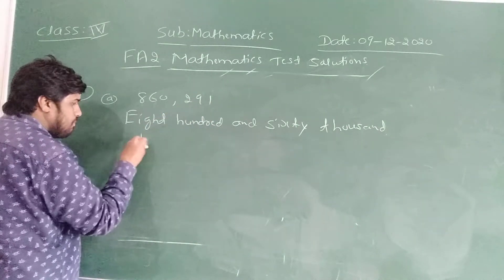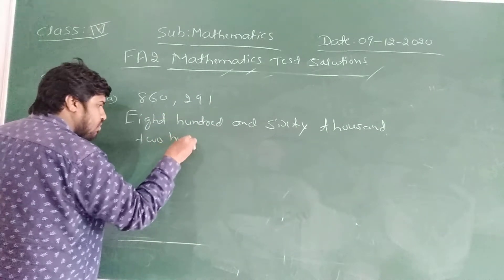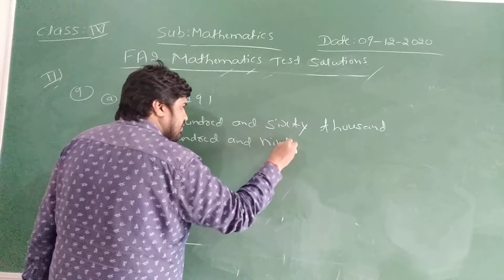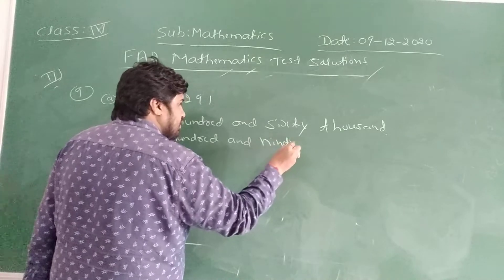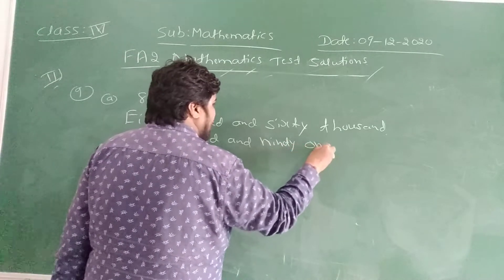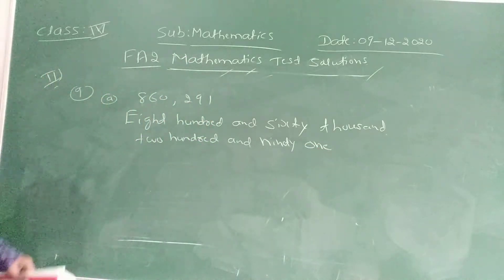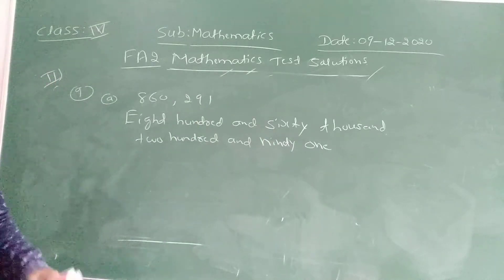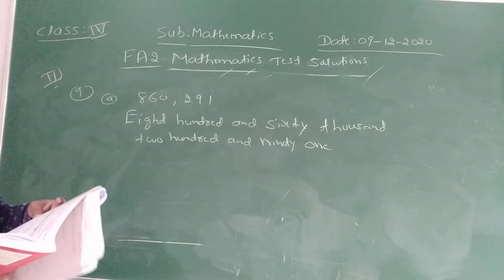291, two hundred nine, two hundred ninety one. Okay, 860 thousand, two hundred ninety one. Okay children.